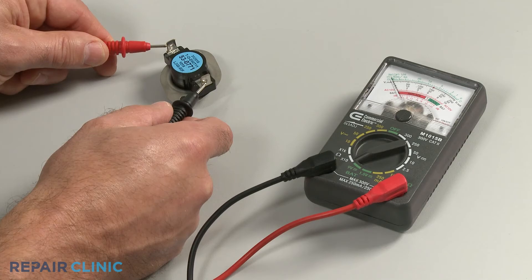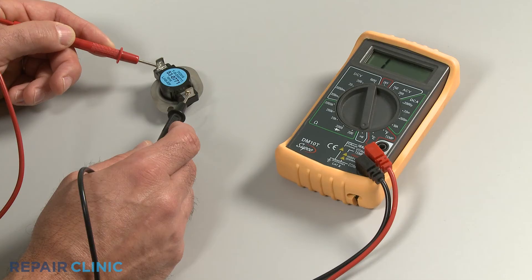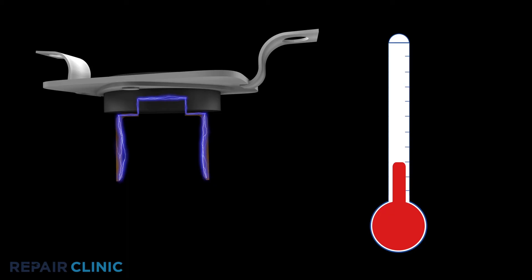If the meter's needle does not move, or the digital display does not change significantly, there is no continuity, which means the thermostat has failed and will need to be replaced.